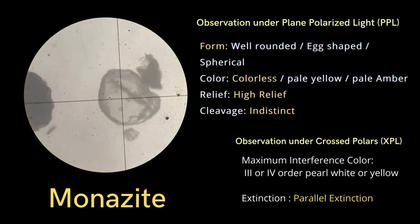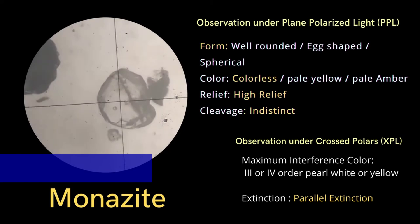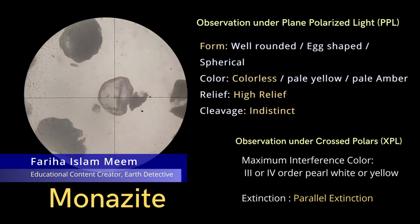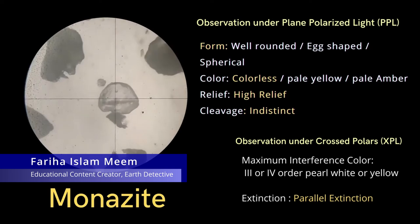Monazite appears well-rounded, sometimes egg-shaped or spherical under plain polarised light. Its color ranges from colourless to pale yellow or even pale amber.